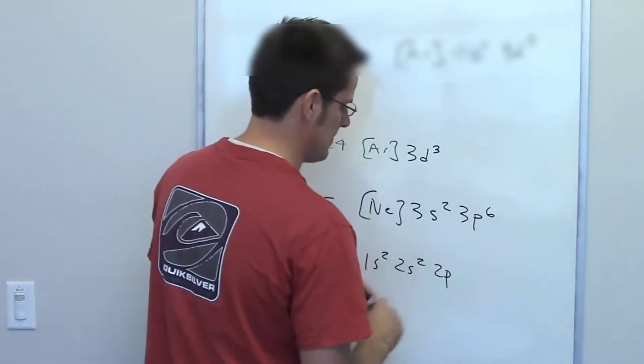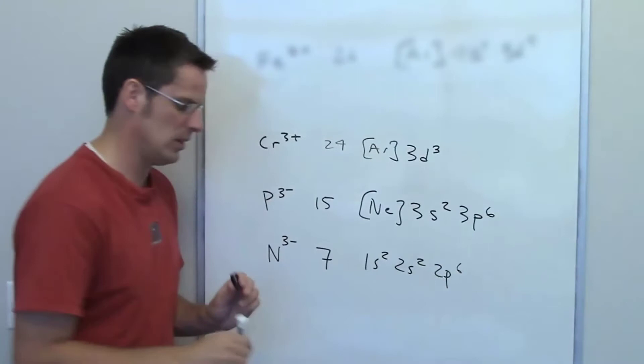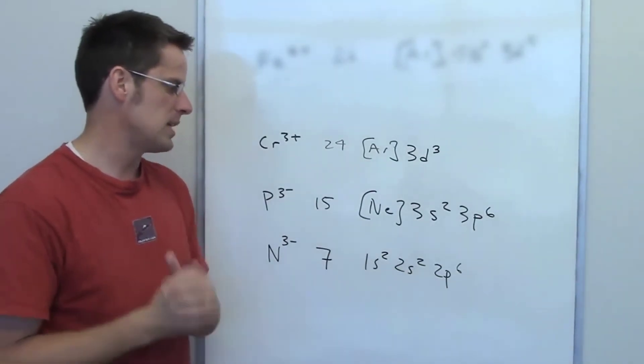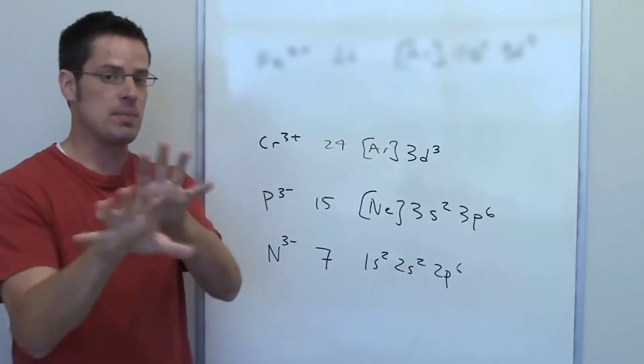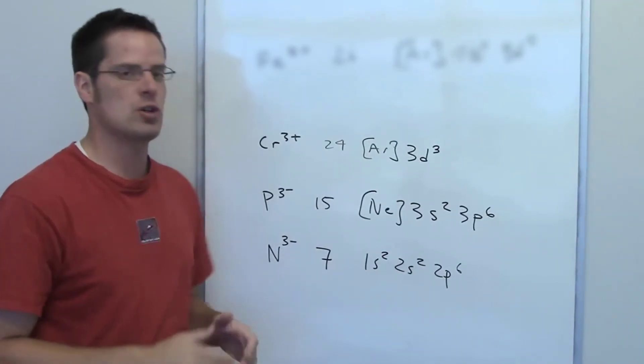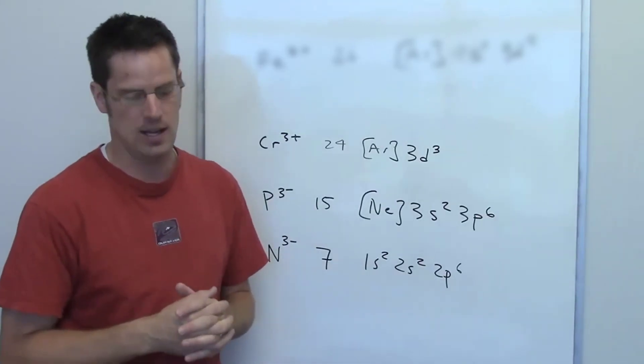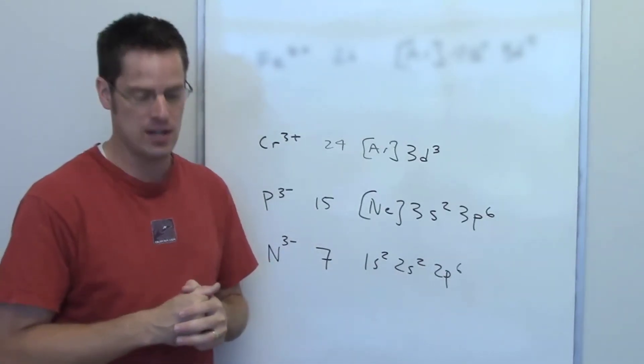I mentioned that it's not ideal to have paired electrons in any energy level unless you have no choice. In this particular case it has no choice. And the other beautiful thing about it having this charge is it now feels like it has a full octet. That is it has, it is isoelectronic with neon the nearest noble gas.